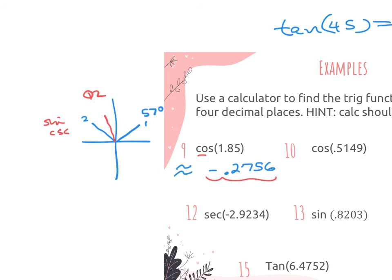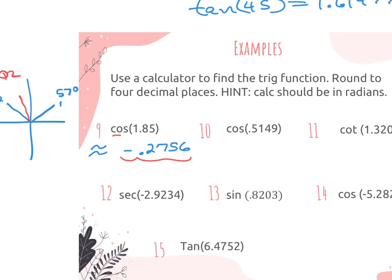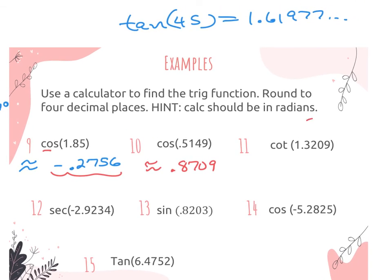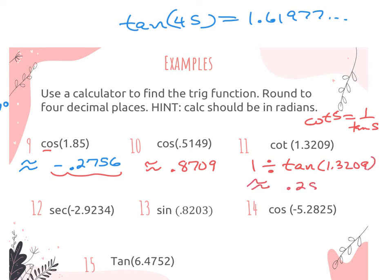Let's try the next one. Again, you're just touching the cosine button. This is like half a radian, so it's in quadrant 1, and I should be getting a positive answer. When I do this on my calculator, I get 0.8709. Now, cotangent — there is no button. This is where we have to do the reciprocal. Cotangent equals 1 over tangent. So I'm going to do 1 divided by the tangent of 1.3209. Hit enter: 0.2552.